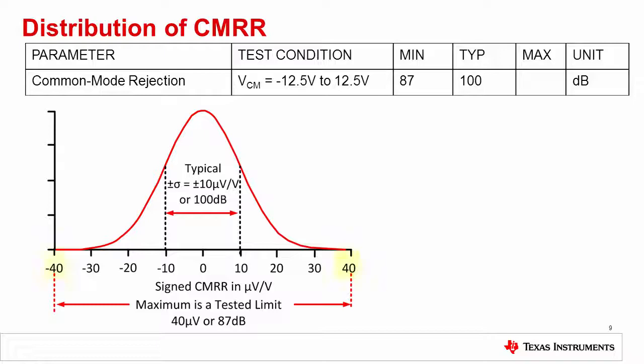Of course, the minimum value of CMRR also corresponds to the tails of the distribution, which in this case are at plus minus 40 microvolts per volt, or 87 dB. Notice that the sign of the CMRR in volts per volt can either be positive or negative, but that the sign of the decibels will always be positive.